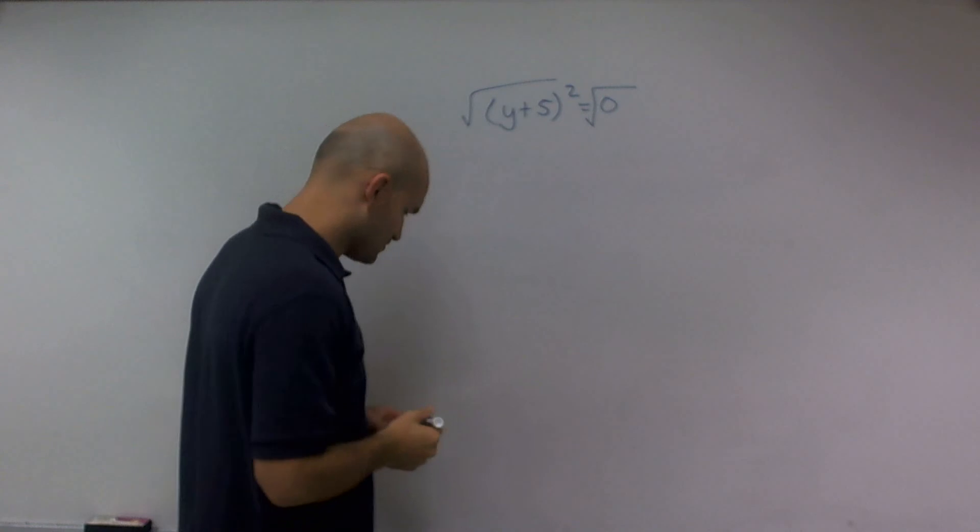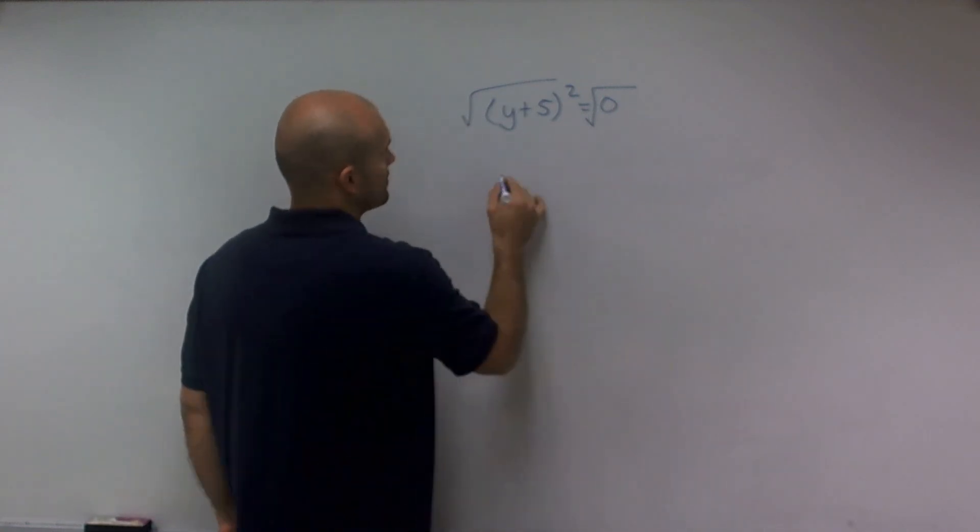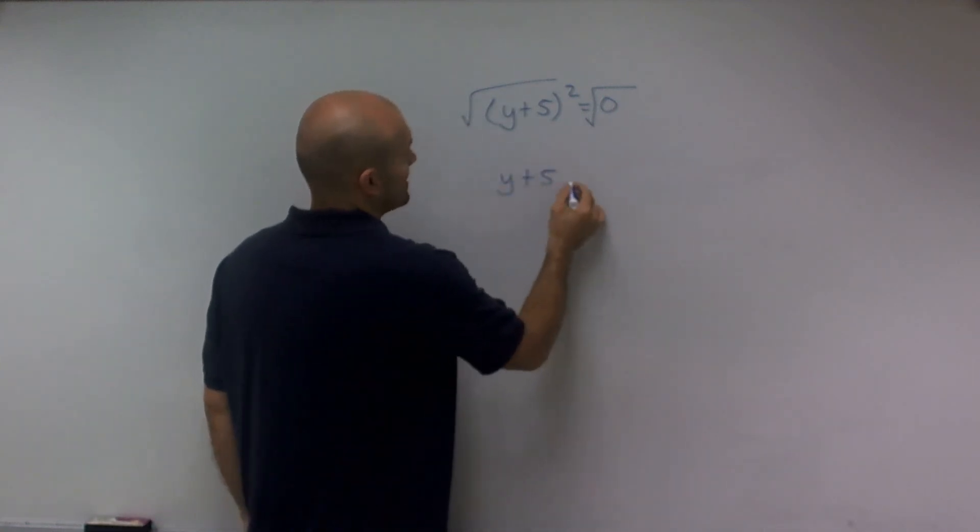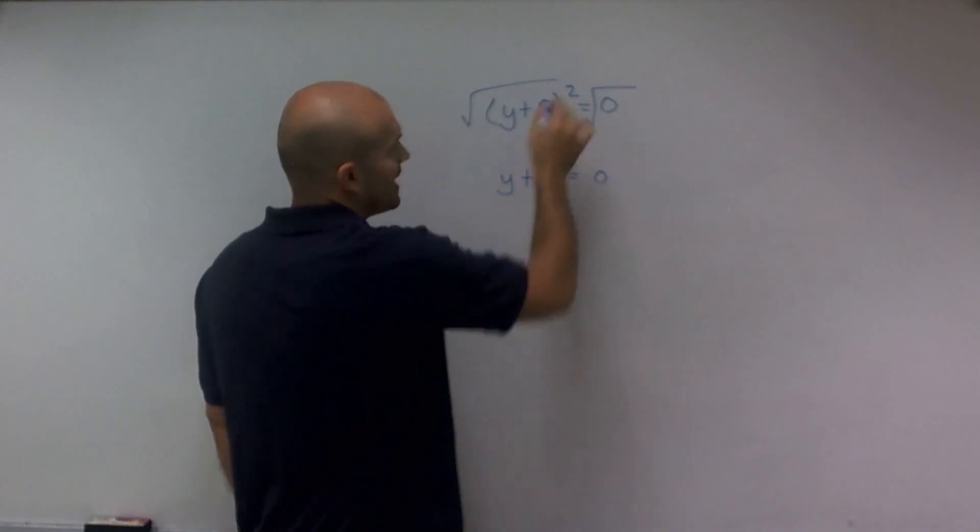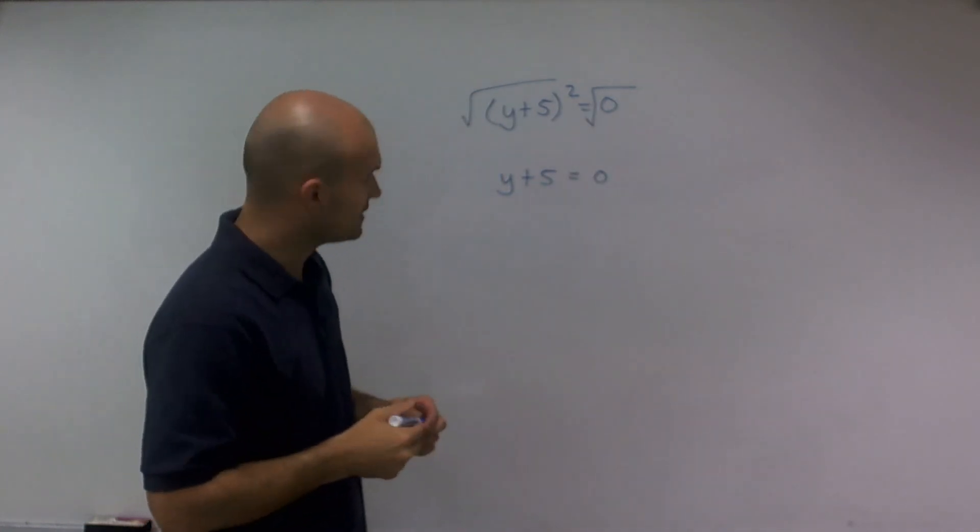So now when I take the square root of both sides, I'm left with y plus 5 equals 0, as the square root of 0 equals 0.